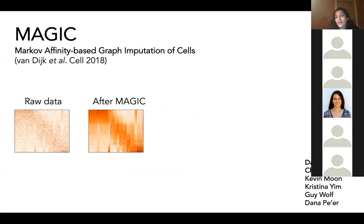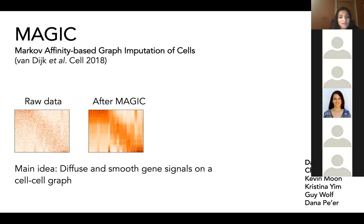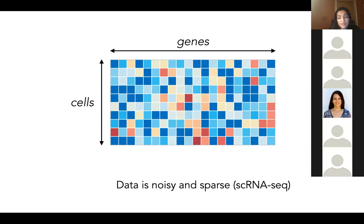What got us started was the very first challenge I tackled when I started my faculty position. I really wanted to understand if we could learn gene regulatory networks from single-cell RNA sequencing data, but I couldn't tell anything about the relationship between genes because there was so much noise — a very specific kind of noise. When we set out to solve this, we discovered this whole world of diffusion-based data manifold learning, which helped us solve the problem and gave us a fundamental tool.